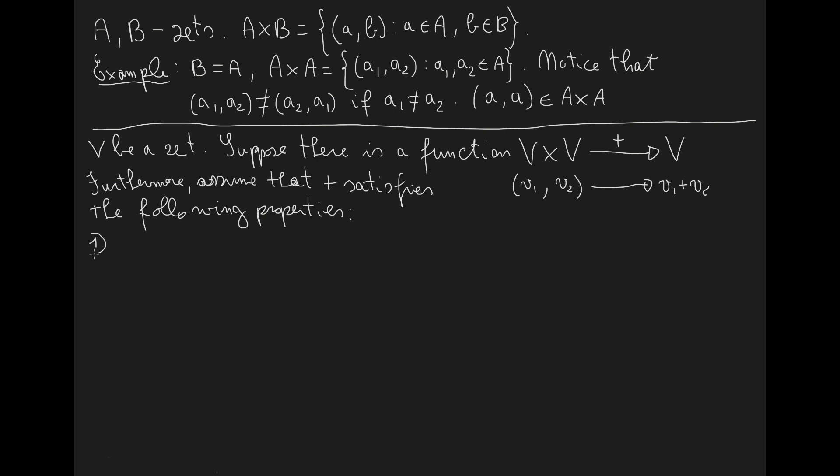Property number one, V1, is called associativity and relates the triple sum of three vectors in the following way: if I take the sum of V1 plus the element that I get summing up V2 with V3, this triple sum will be equal to